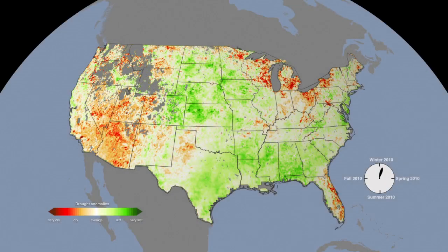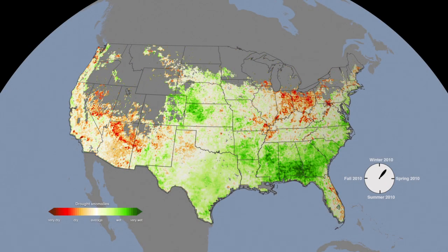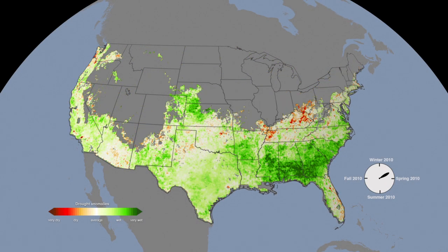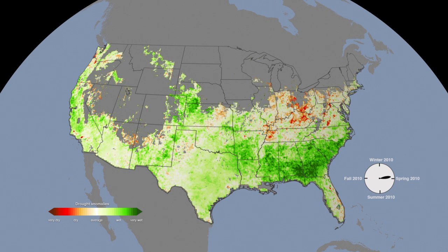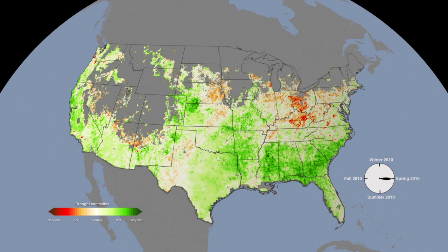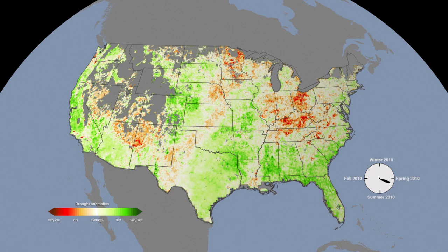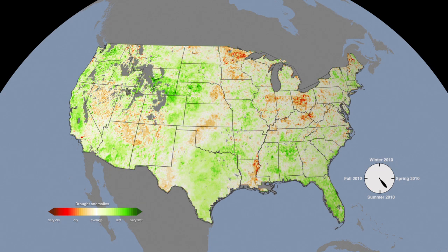The Evaporative Stress Index provides objective, high-resolution information about the evaporation of water from land's surface. Overall, 2010 showed higher-than-average evaporation. It was a relatively wet year, despite occasional pockets of drought.